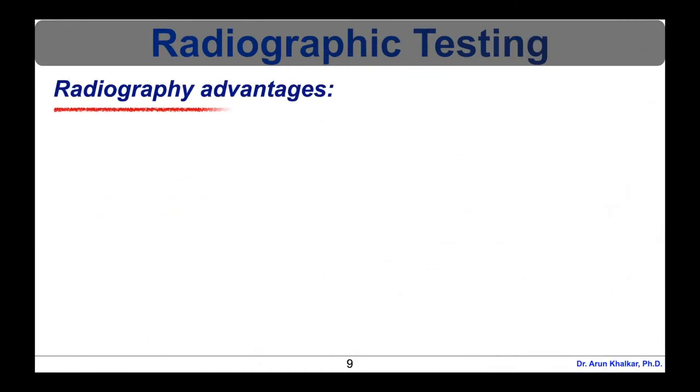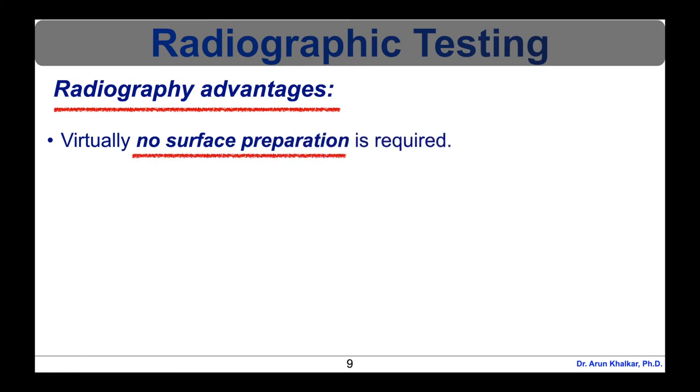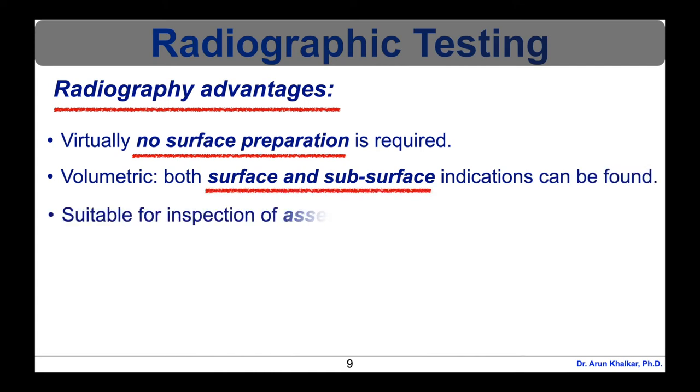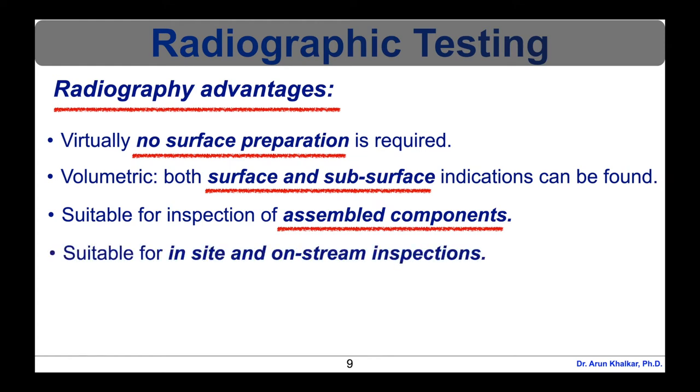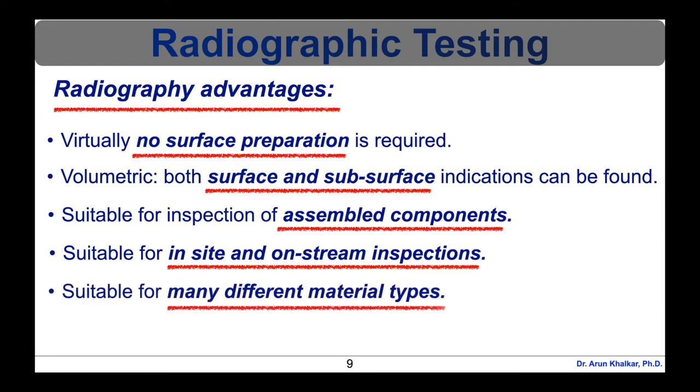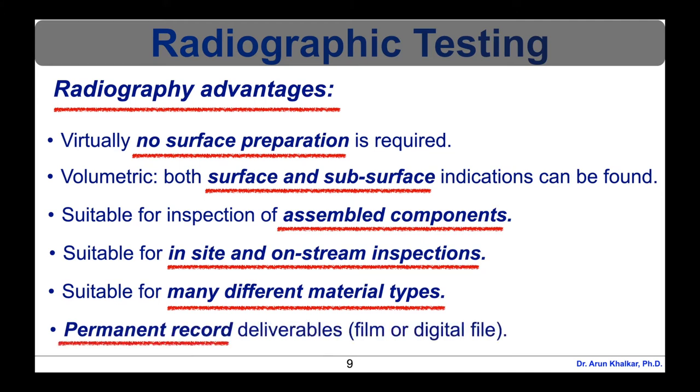Now let's see the advantages of radiography testing. Virtually no surface preparation is required. Volumetric, both surface and subsurface indications can be found. Radiographic testing is suitable for inspection of assembled components as well as in-situ and on-stream inspections. This testing is useful for many different material types. The data obtained by radiographic testing is permanently recorded and deliverable in the form of film or digital file. So these are the several advantages of radiographic testing.